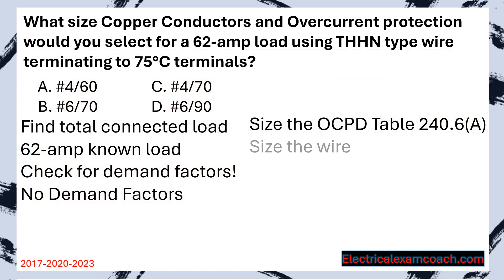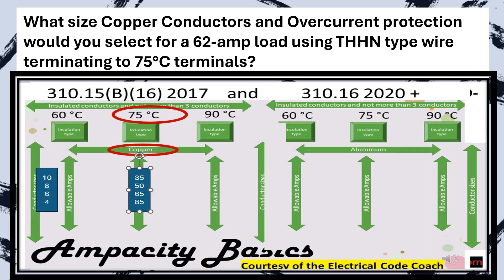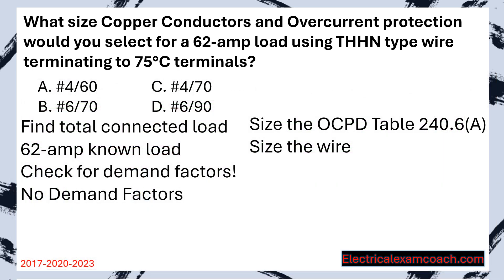Now we can size our wire. For that we head to our primary ampacity table. We're on the copper side because it's asking for copper, and we're in the 75 degrees C column. We slide down and find a wire that covers the known load, and we find that we're going to have a 6 gauge wire on a 70 amp breaker.